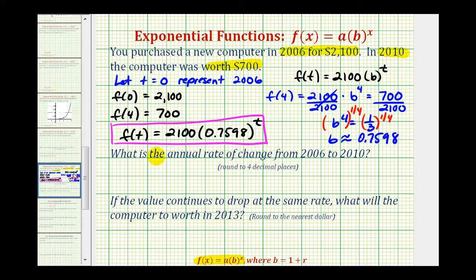So to answer our first question, what is the annual rate of change from 2006 to 2010? We need to remember that our base 0.7598 is equal to one plus r. Where r will be the annual rate of change.